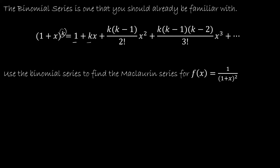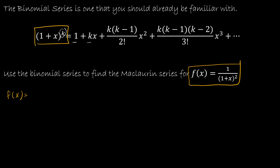I'm going to use the binomial series to help me with this Maclaurin series. Maclaurin just means that it's centered at 0. So I'm going to rewrite my function f(x) in this format — I'm going to have 1 plus x to the negative 2, because it's in the denominator and to the second power.